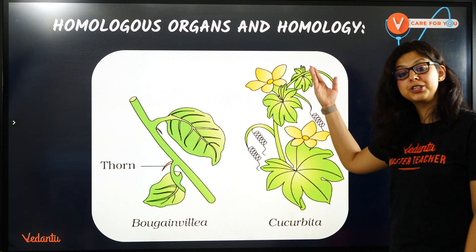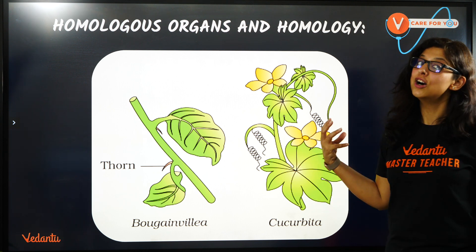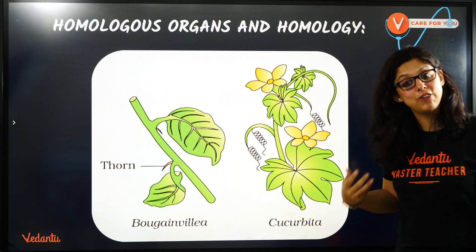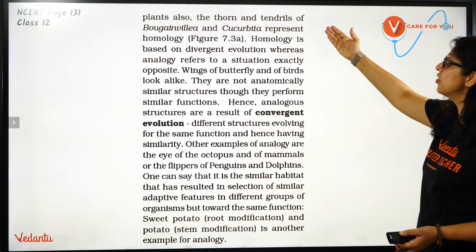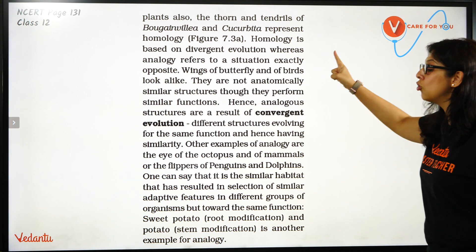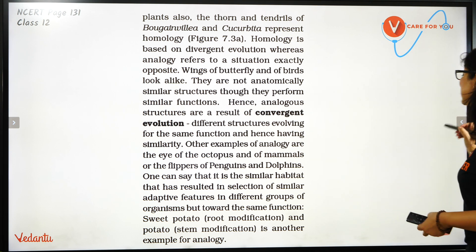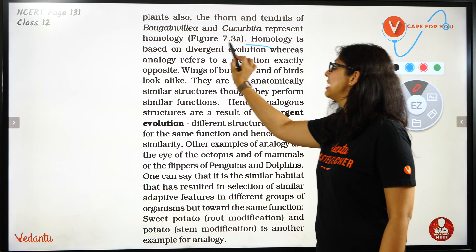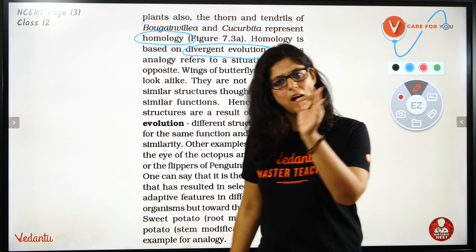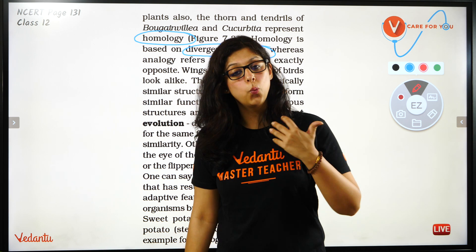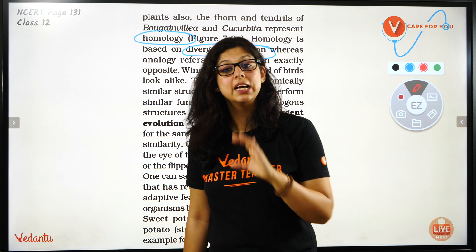Another example: Bougainvillea and Cucurbita show Homologous Organs. Bougainvillea has thorns and Cucurbita has tendrils — these are different structures serving different functions, but they share the same origin. Thorns and tendrils of Bougainvillea and Cucurbita represent homology. One thing becomes different — that is Divergent Evolution.